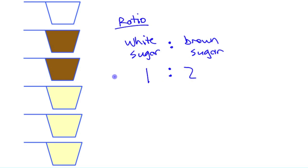You could actually compare the amount of brown sugar. You could compare the amount of brown sugar to the total number of cups. Total cups, total number of cups there, we got six. And this is two. Two to six.